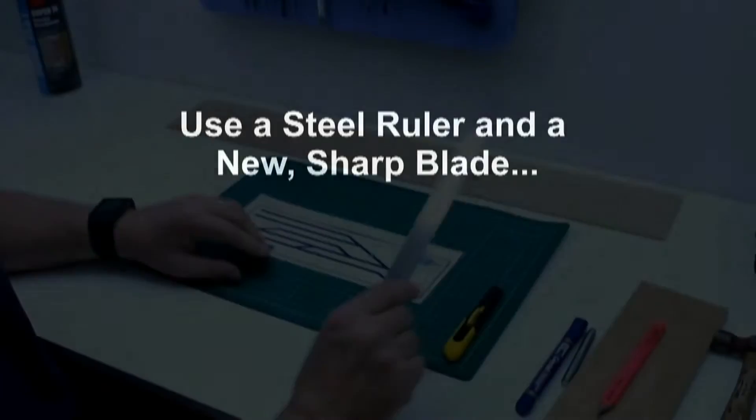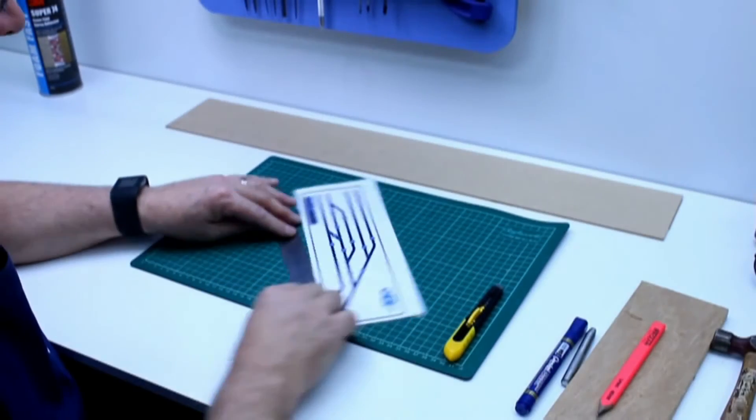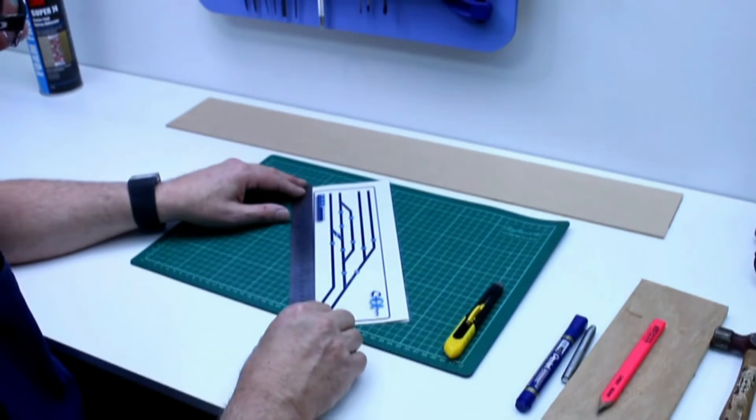Now we start as we mean to go on, using the correct tools: in this case a steel ruler and a new sharp blade.